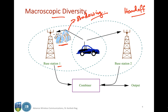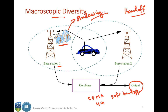You can also combine the two signals from the two base stations to have a combined output. This combination happens in CDMA systems or 4G systems and is called soft handoff. This is the high-level concept of macroscopic diversity. Additional references will be uploaded to Bright Space for those interested in learning more.